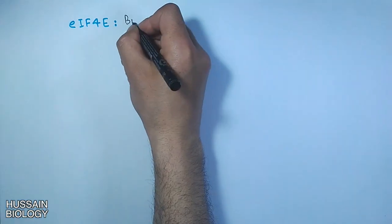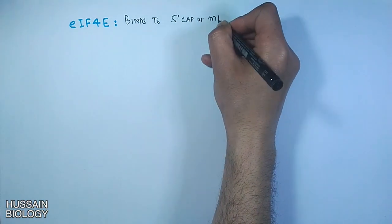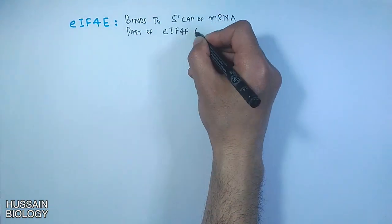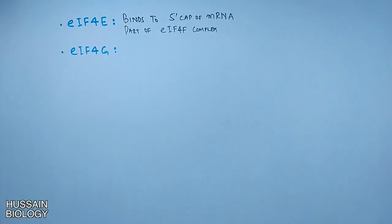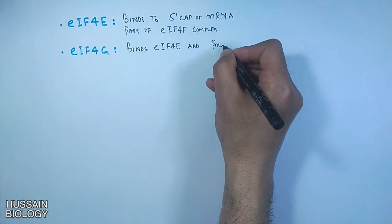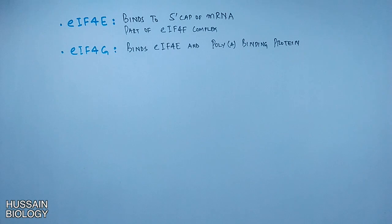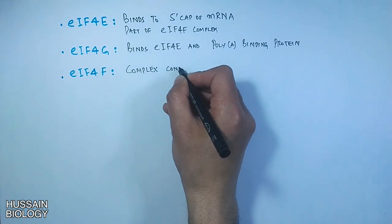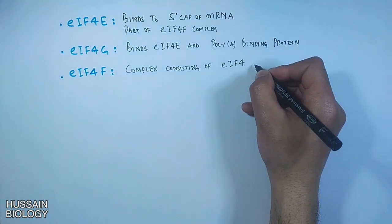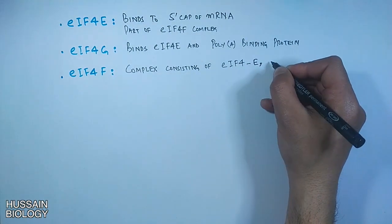Moving further we have EIF4e, this initiation factor binds to 5' cap of mRNA and it is a part of EIF4f complex. Another is EIF4g, it binds IF4e and poly-A binding protein. And finally we have the complex initiation factor in the name of EIF4f, it is a complex factor consisting of three factors: EIF4e, EIF4a, and EIF4g.